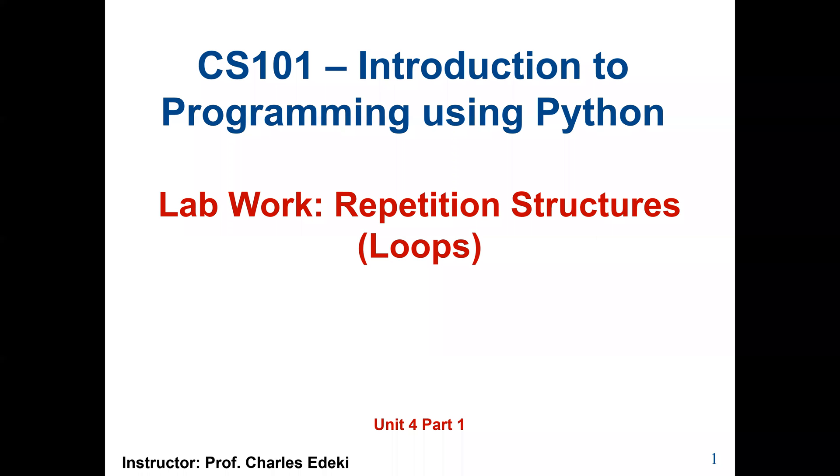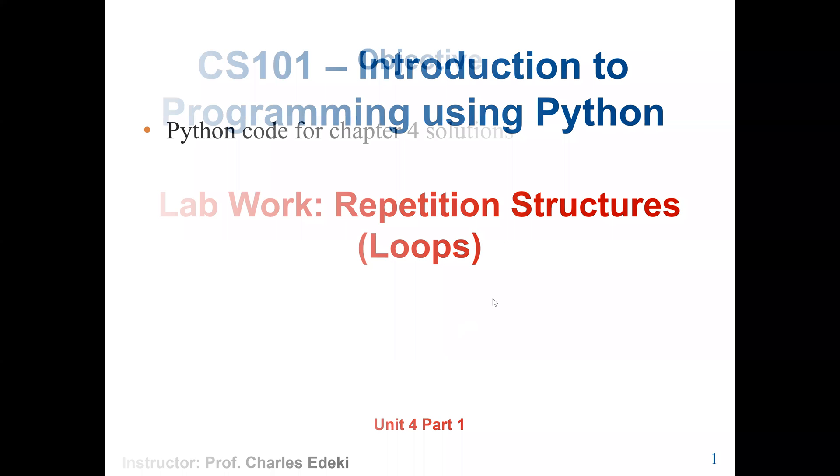Welcome to CS101, Introduction to Programming using Python. This lab will cover Chapter 4 of our course textbook. Our main objective is to use the repetition control structure, or the loops, to solve two problems. So let's see our first problem.